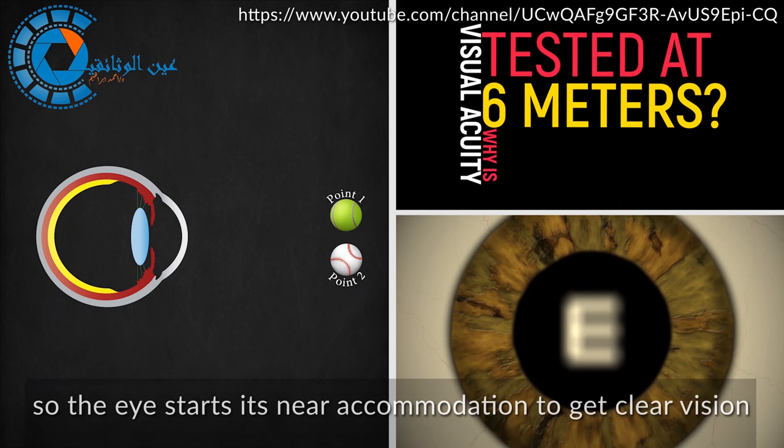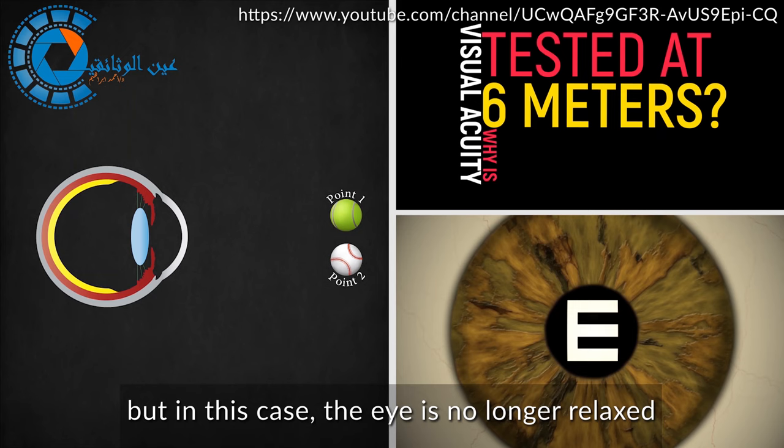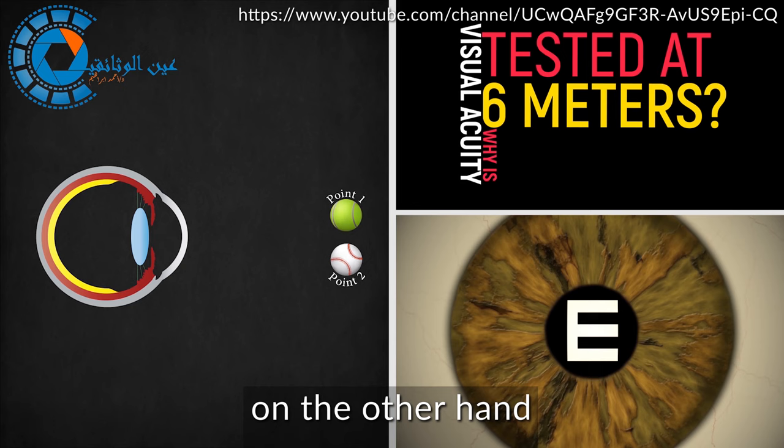When the symbol comes closer than 6 meters, the eye gets blurred vision. So the eye starts near accommodation to get clear vision. But in this case the eye is no longer relaxed. And we lose the condition for measuring visual acuity.